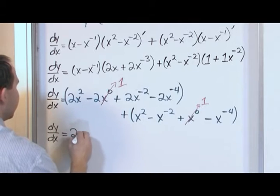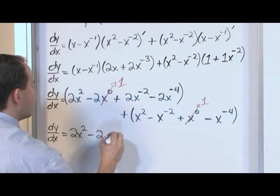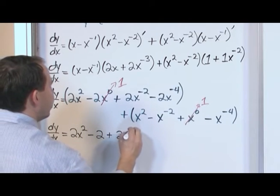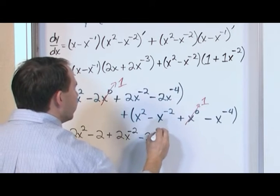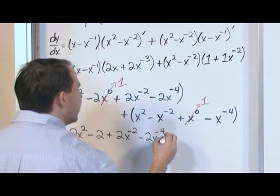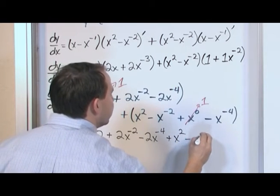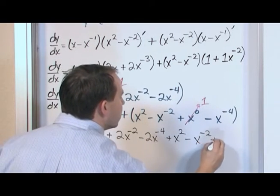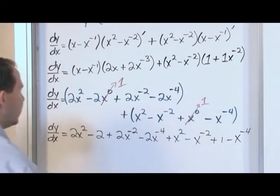So I'll have 2x squared minus 2, because this is times 1, plus 2x to the minus 2 from here, minus 2x to the minus 4 from here, plus x squared minus x to the minus 2, plus 1 minus x to the minus 4. And that barely fit on there.